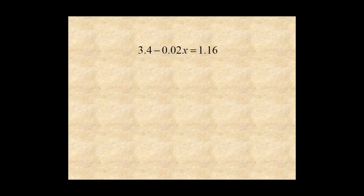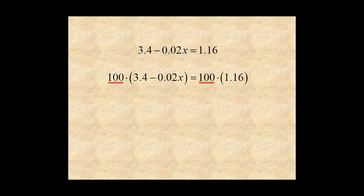Now, back to the equation. The first coefficient has one decimal place. The other two coefficients have two decimal places. Since the most number of decimal places of all the coefficients is 2, multiply both sides of the equation by two powers of ten, or 100. And in one easy step, all the decimals are cleared from the equation.